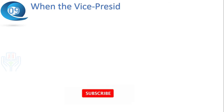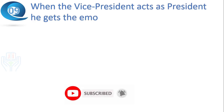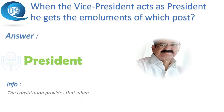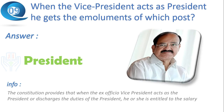Next question: when the Vice President acts as President, he gets the emoluments of which post? Answer: President. The constitution provides that when the ex-officio Vice President acts as the President or discharges the duties of the President, he or she is entitled to the salary and privileges of the President.